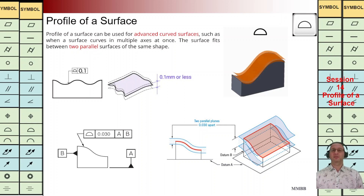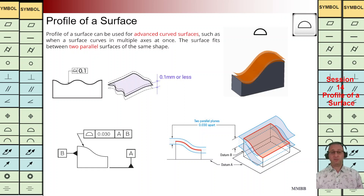Hello everyone, good to see you today. We want to talk about profile of a surface. We have this surface profile symbol here. By implementing this symbol, we are going to check the shape of that surface. In this first example, we have the surface profile symbol and this tolerance zone — we are going to refer to this surface. It means we are going to have two parallel surfaces with this distance 0.1, and this surface should be in that interval.